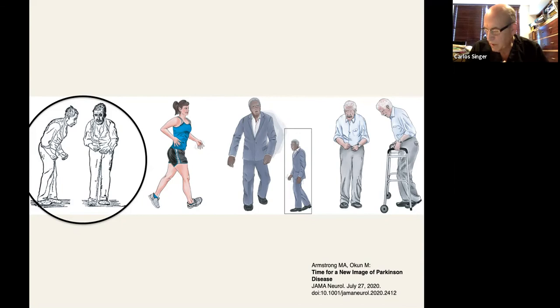It's the most frequently shown, and as pointed out by the authors of the article Time for a New Image of Parkinson's Disease, it runs the risk of stereotyping, so it may not do full credit to the complexities, the clinical complexities of disease, the fact that it can affect women just like it affects men, perhaps a little bit less, 60% male. It can affect different ethnic groups, and it has a variety of progressions that are not really embodied in that illustration.